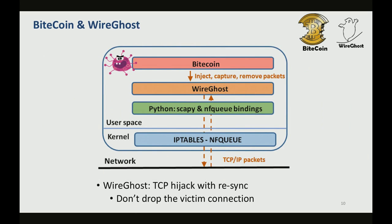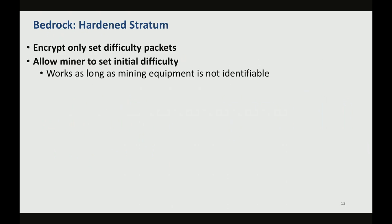We have the design of our proof-of-concept solution. It uses IP tables in order to capture packets. It also uses Scapy for packet manipulation and packet decoding. We also developed a WireGhost middleware that is supposed to maintain TCP synchronization and active resynchronization of the TCP hijacking activities. And finally, the Bytecoin module that is supposed to keep track of all these new job assignments and the share hijacking.